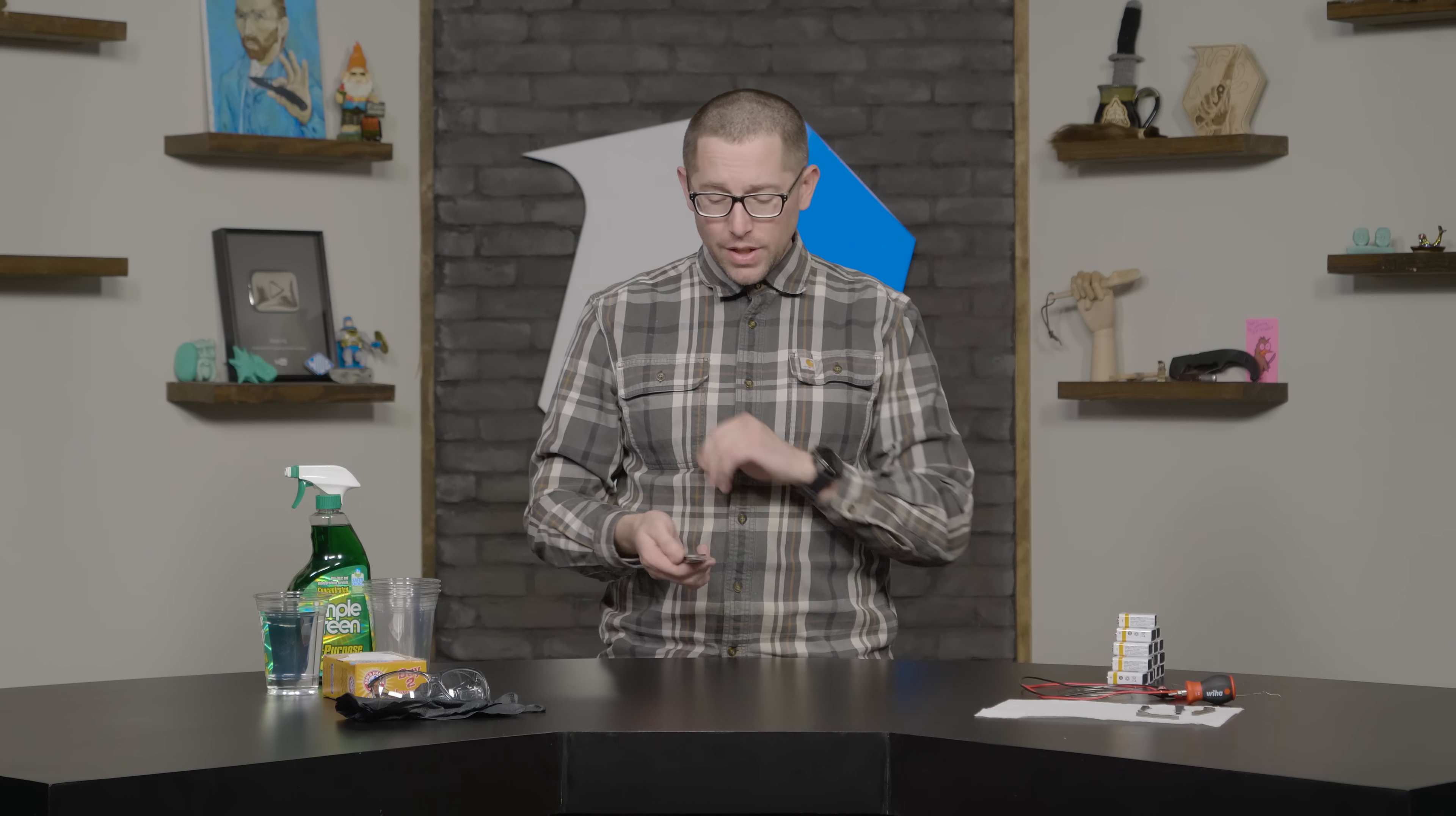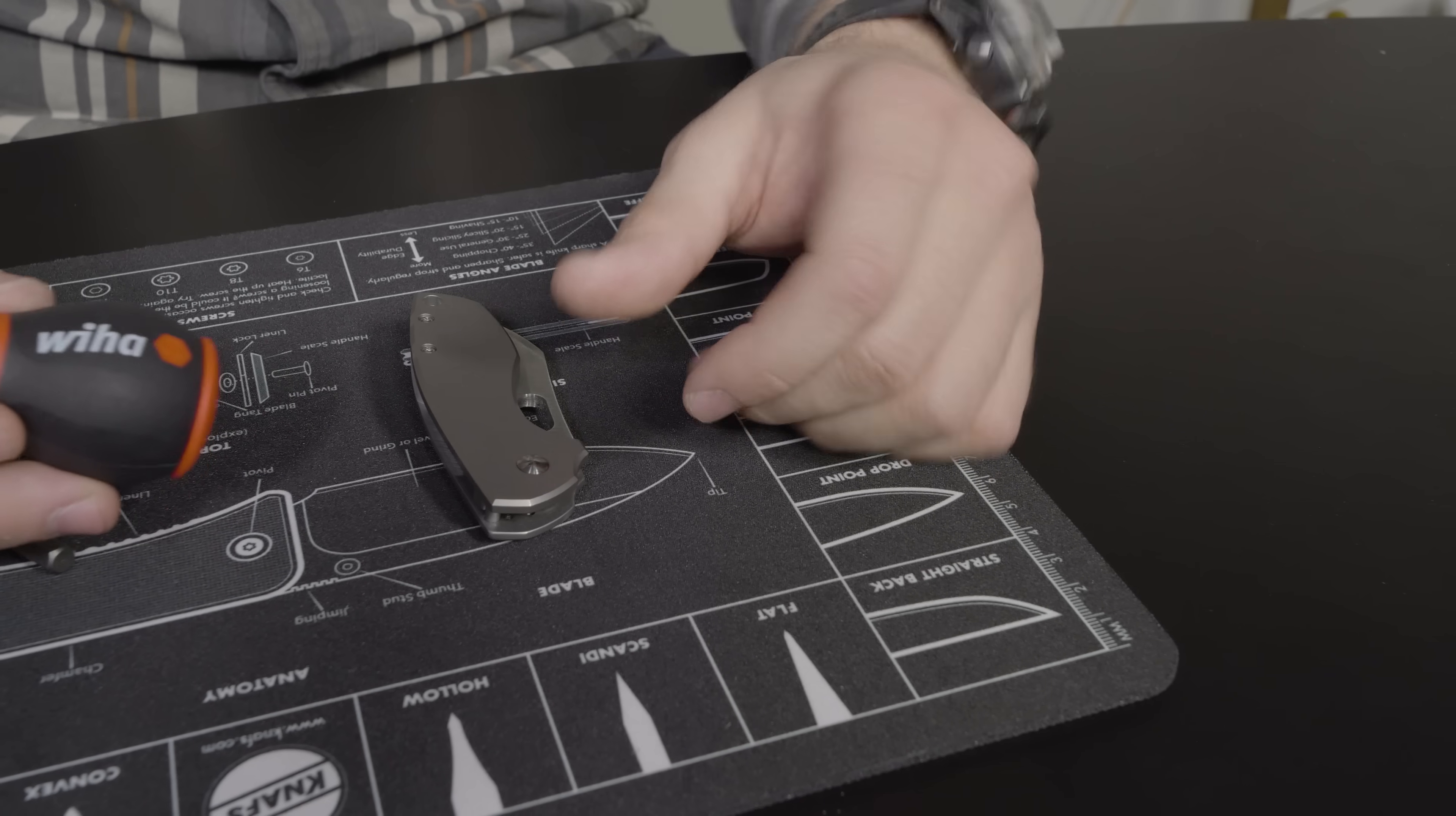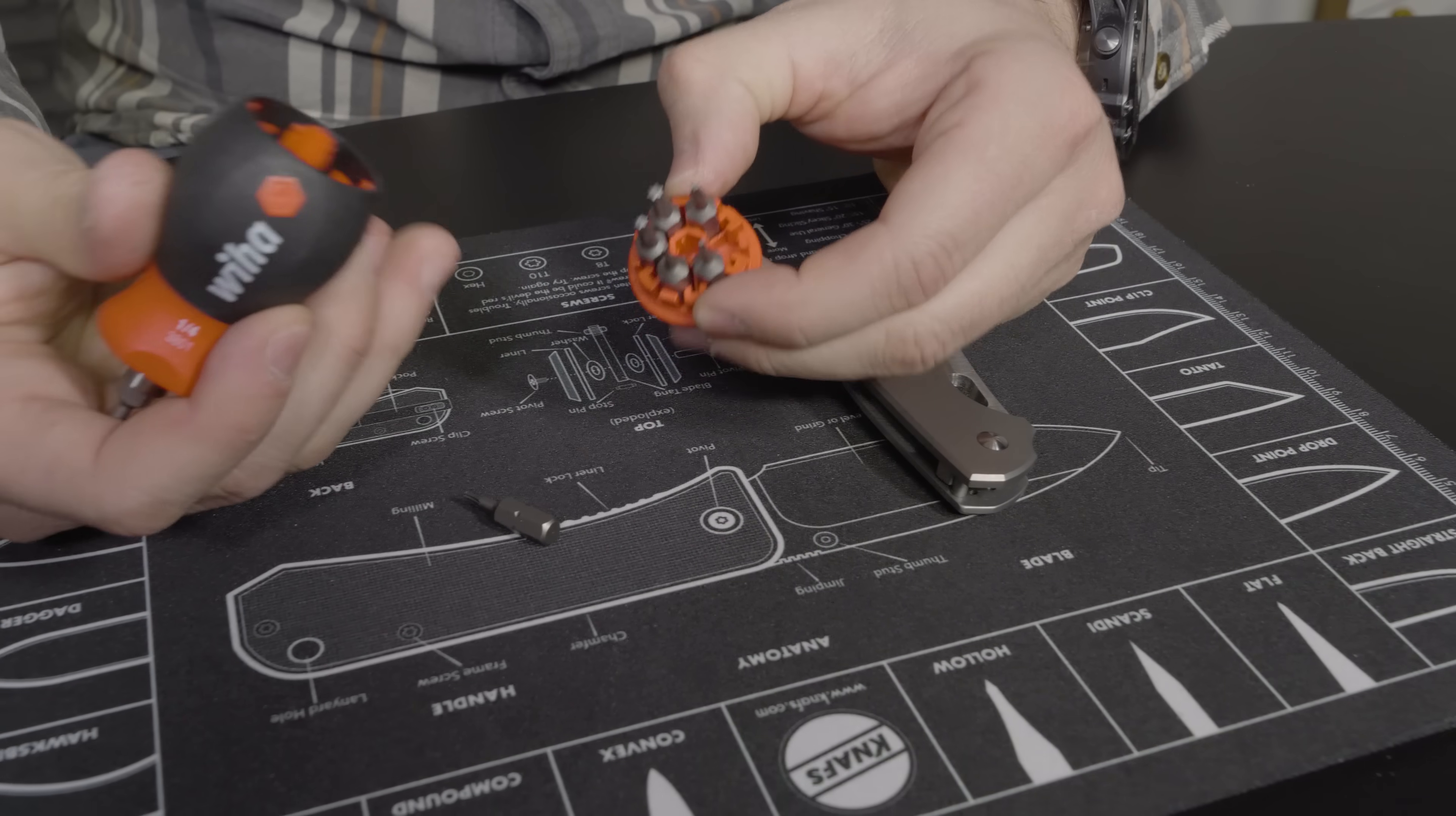Now that you know the basics, it's time to take your knife apart. We're going to be using a CRKT Pilar with an aftermarket titanium scale from Flytanium. So we're going to be using the Weha tool. This is pretty cool because it has a bunch of bits.